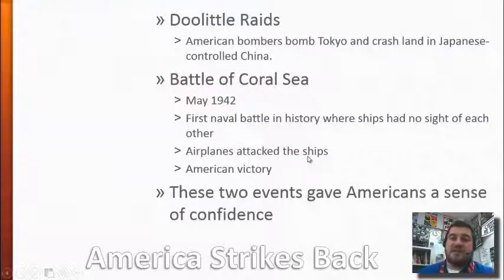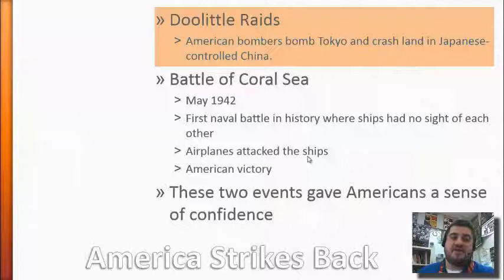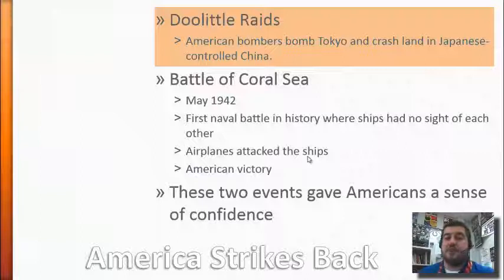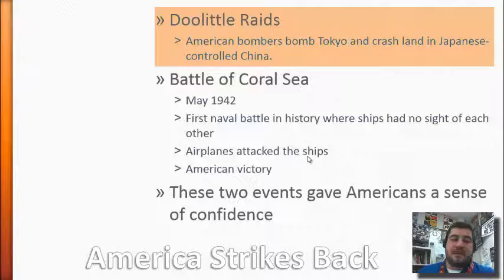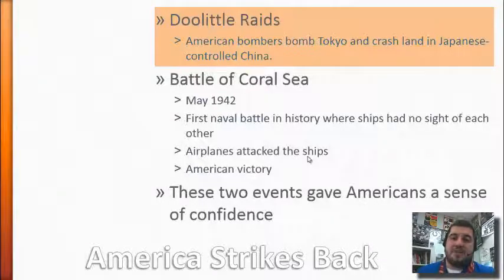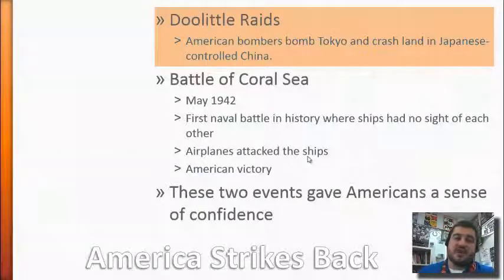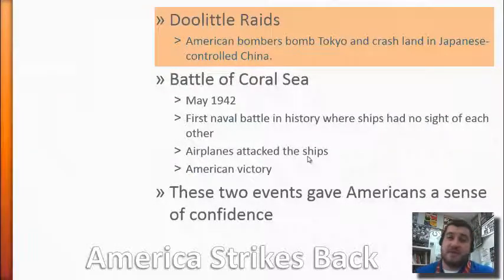There is some hope, because the Doolittle Raids are an immediate attempt to strike back against Japan — and that can be seen in the movie Pearl Harbor. American bombers were specially made to fly off aircraft carriers and bomb Tokyo, but they didn't have enough fuel to get back. They kept going and crash-landed in Japanese-controlled China. It was a very risky maneuver, and the people who did it were very brave. These are known as the Doolittle Raids, after their creator.